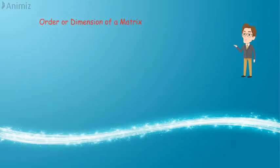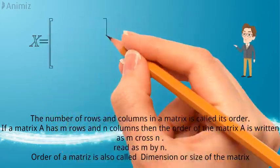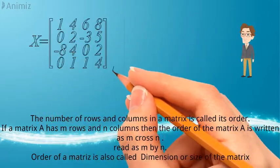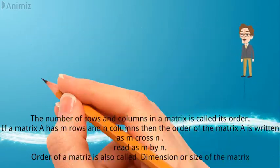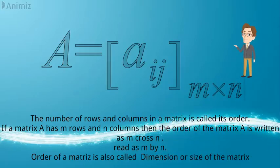Order or dimension of a matrix. The number of rows and columns in a matrix is called its order. If a matrix has m rows and n columns, then the order of the matrix is written as m cross n, read as m by n. Order of a matrix is also called dimension or size of the matrix.